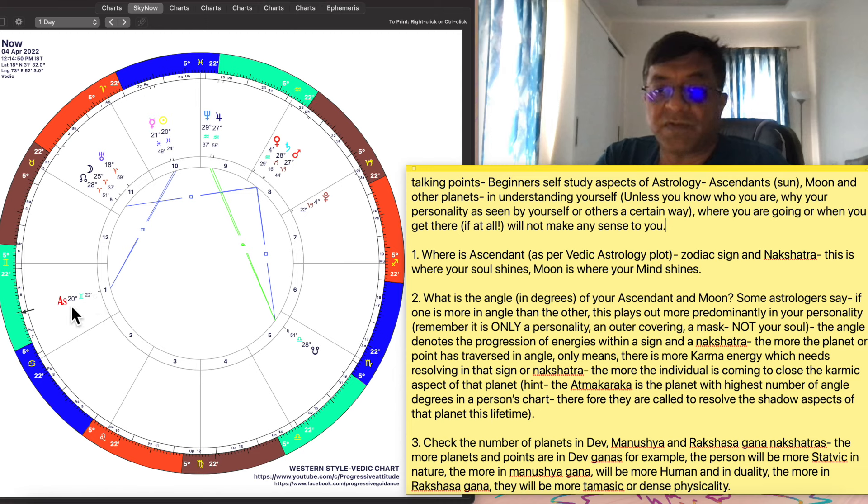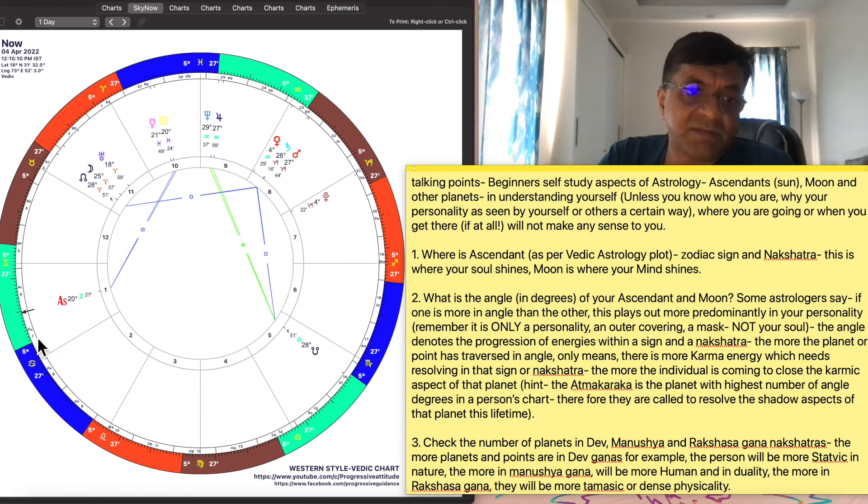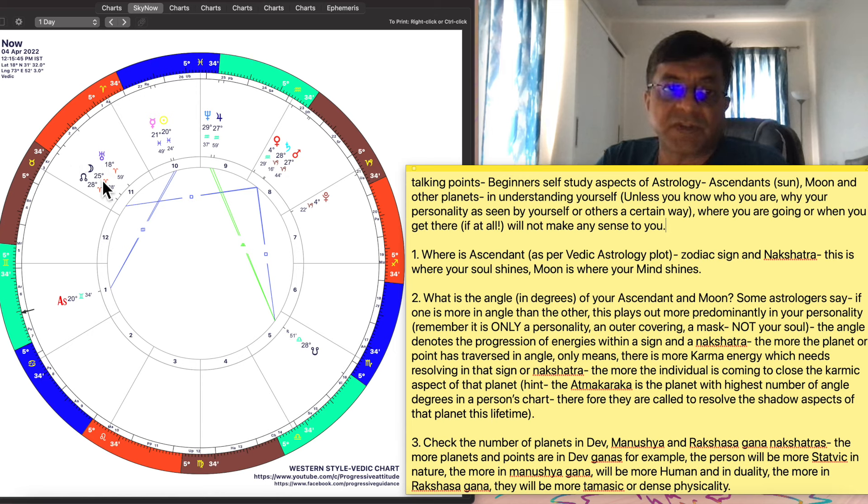We will just take this current time as the reference point. Right now the ascendant is at 20 degrees of Gemini in Ardra nakshatra. As you can see, it's almost about to go into Punarvasu. This is Punarvasu, that's Ardra. So this person's ascendant is at 20 degrees of Punarvasu. We are talking mainly of degrees and angles here. As per Vedic astrology plot, but this is Western style so it looks circular. Where is your ascendant? This person's ascendant is at 20 degrees. Zodiac sign is Gemini. It's transcending beginning or ending of Punarvasu because 20 degrees. It's just about to start Ardra nakshatra right now. This is where this person's soul is shining. It's about to complete the energies of Punarvasu and go into Ardra. Moon is where your moon shines. This person's moon, whoever is born right now, is in Bharani nakshatra. So this person's moon shines in Bharani nakshatra and all the themes of it.